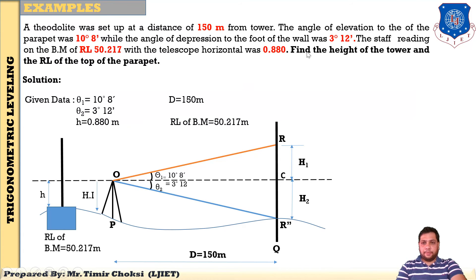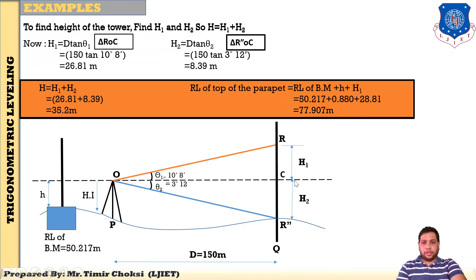Now, after step number 1 — all the data is given. Now step number 2: draw the figure. Starting from the ground — this is our ground. You have set up the instrument at P. This is our object Q R. The angle of elevation is 10 degrees 8 minutes, angle of depression is 3 degrees 12 minutes, height of instrument staff reading is given as 0.880, RL of benchmark is given as 50.217, and the distance between the object and instrument station is given.